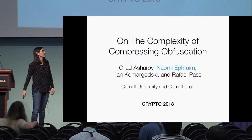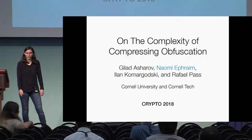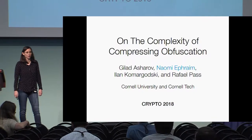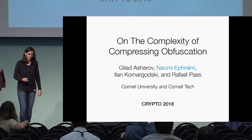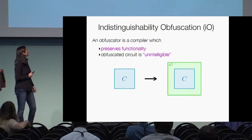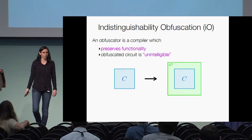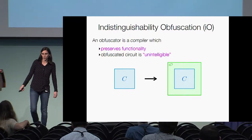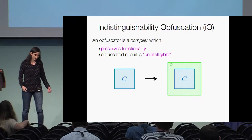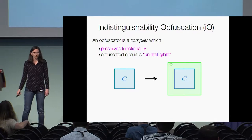I'll be talking about the complexity of compressing obfuscation. This is joint work with Gilad Ashro, Ilan Komargotsky, and Raphael Pass. Over the last few years, indistinguishability obfuscation, or IO, has become one of the most exciting primitives in modern cryptography.